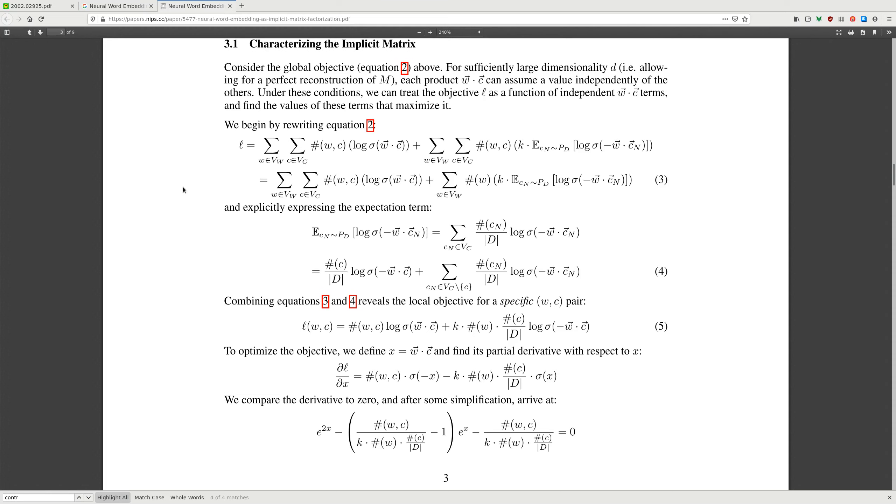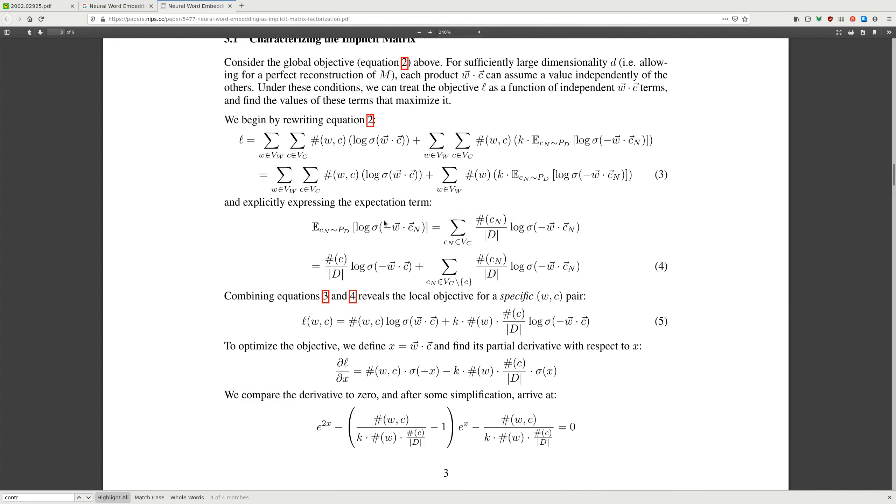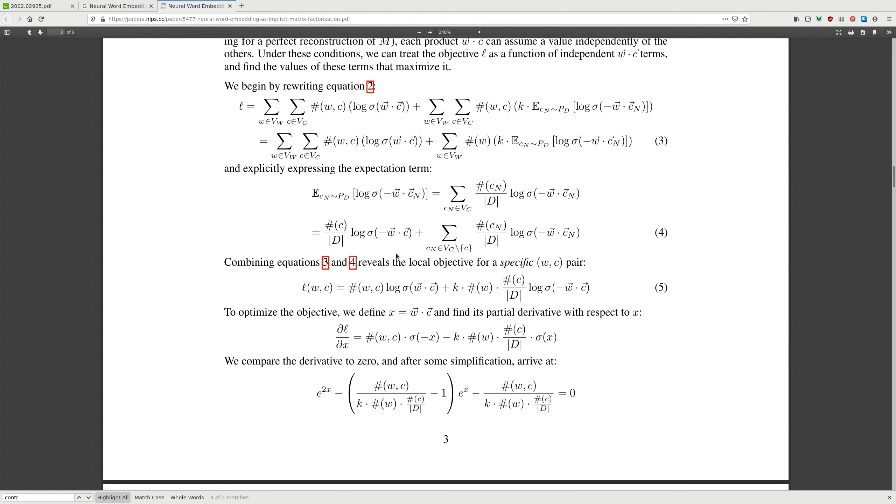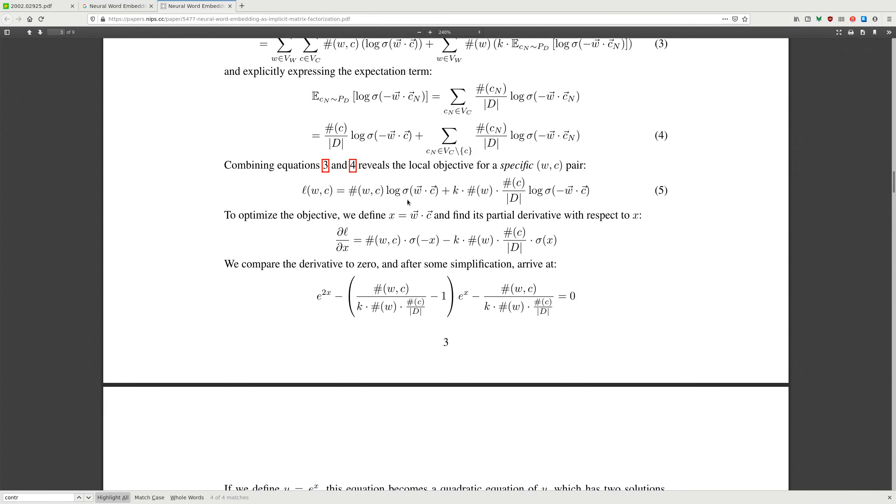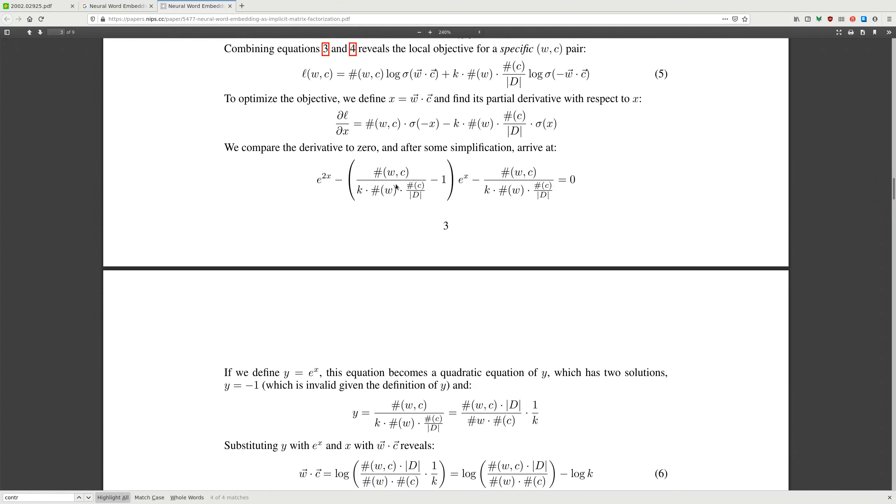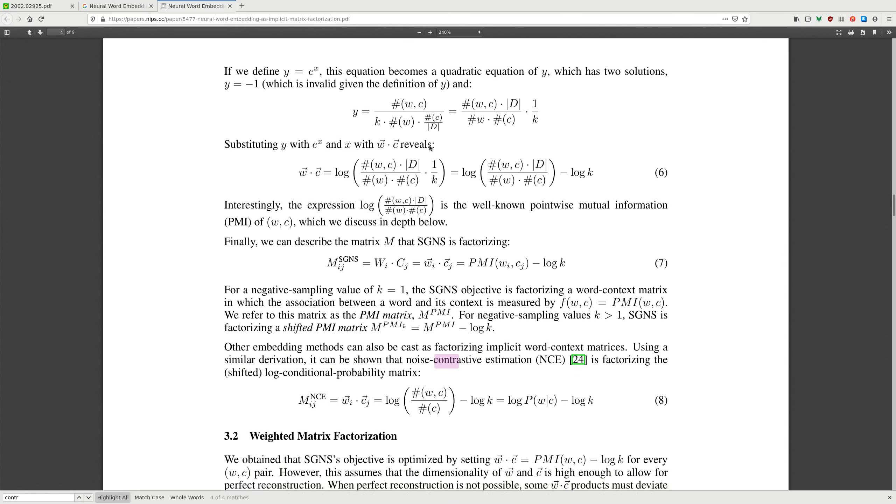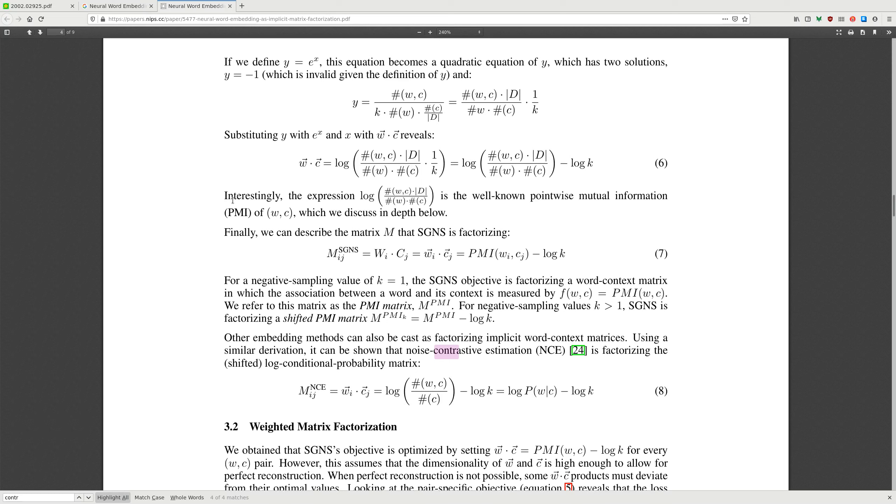We begin with rewriting equation 2. We have these sums over words and context, then we have these counts of words being in context, and log of sigma. I'm not going to go too deep on this. Explicitly expressing the expectation term. Combining equations 3 and 4 provides the local objective for a specific word and context pair. So we have a loss function equation. We compare the derivative to zero. After some simplification we arrive at, if you define y, substituting C reveals...